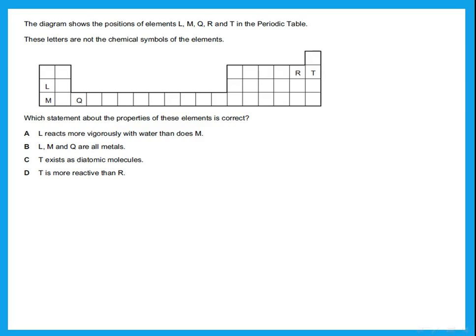L, M, and Q are all metals. Is that correct? Yes, because L, M are in group 1 and Q is transition and all of these are metals. So actually that's the correct answer.